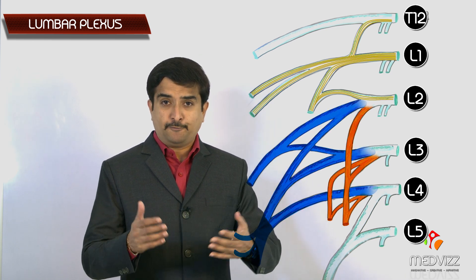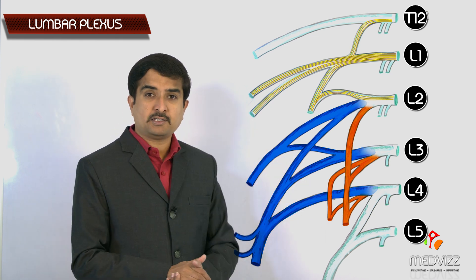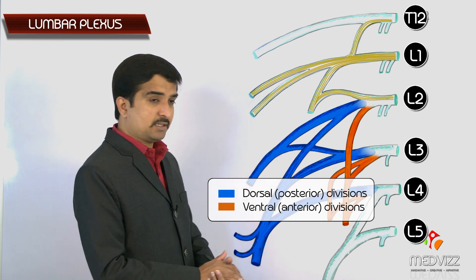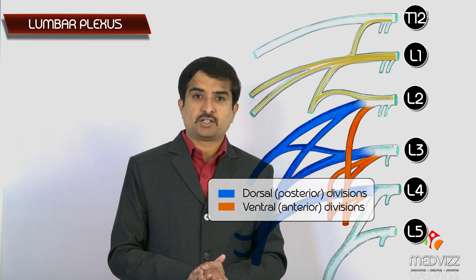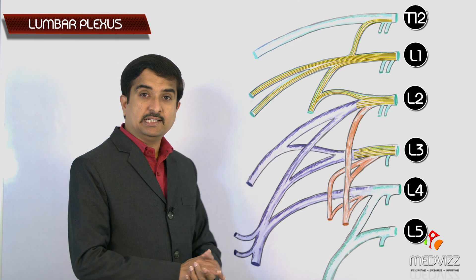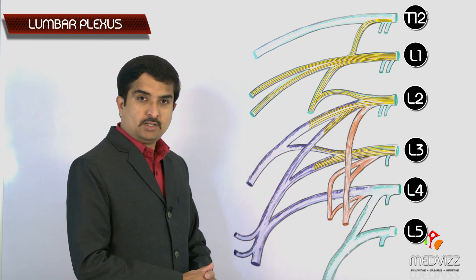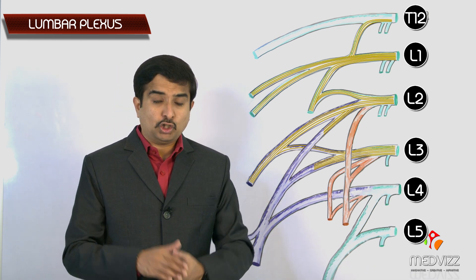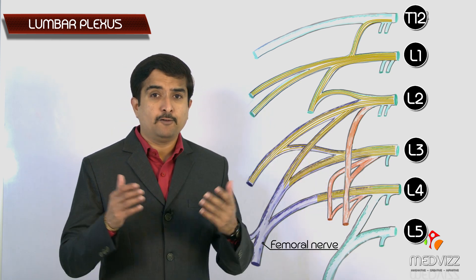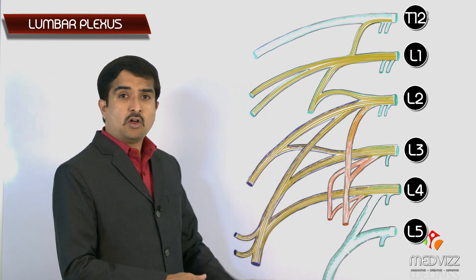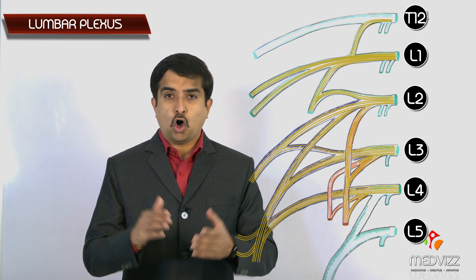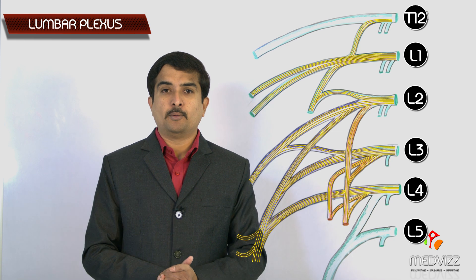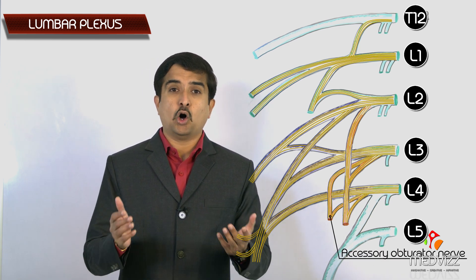The nerve roots L2, L3, and L4 each divide into a dorsal (posterior) division and a ventral (anterior) division — the dorsal division is depicted in blue and the ventral division in orange. The dorsal divisions of L2 and L3 unite to form the lateral cutaneous nerve, and the dorsal divisions of L2, L3, and L4 unite to form the femoral nerve. The ventral divisions of L2, L3, and L4 unite to form the obturator nerve, and sometimes the ventral branches of L3 and L4 also form the accessory obturator nerve, though it is not present in all individuals.